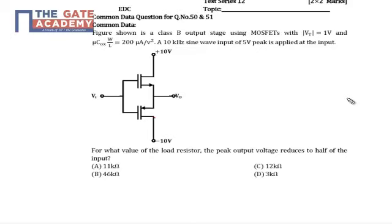Hello friends, the second question of the common data question says: for what value of the load resistor the peak output voltage reduces to half of the input?